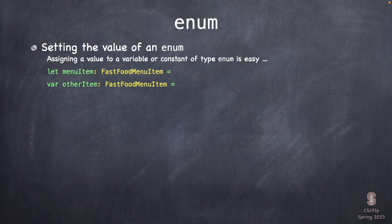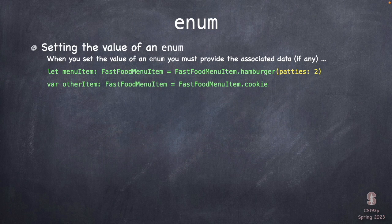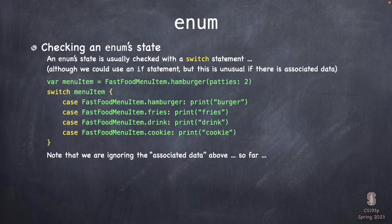Setting the value of an enum looks like this: `FastFoodMenuItem.hamburger` or `FastFoodMenuItem.cookie`. With associated data you provide it in parentheses. Swift can infer one side or the other of an equals sign, but not both — if you just said `= .cookie` with no type annotation, Swift wouldn't know which enum has a cookie. So you need at least one side explicit. Swift can also infer if you're passing into a function.